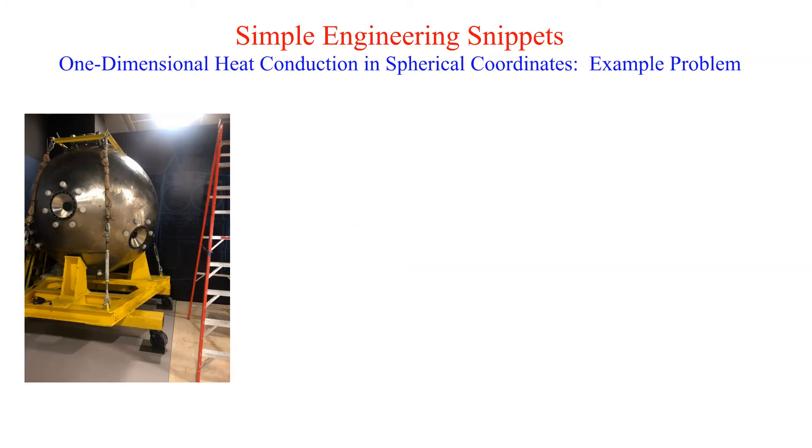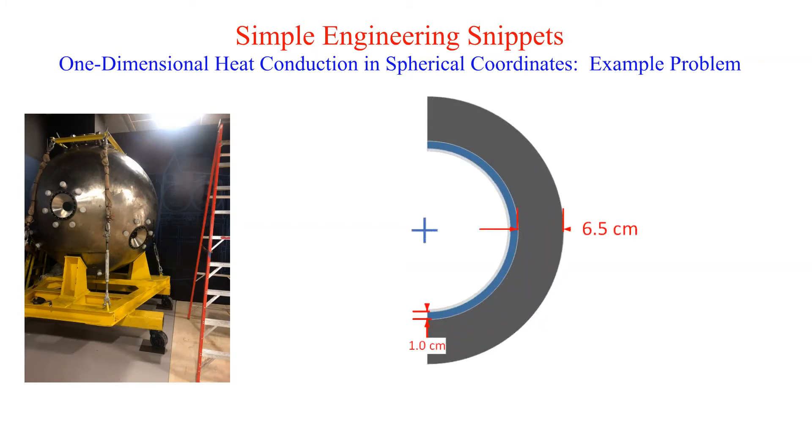A submersible consists of several layers, including an inner clad of aluminum that is embedded with heaters set to maintain a constant 20 degrees Celsius on the inner surface of the submersible.